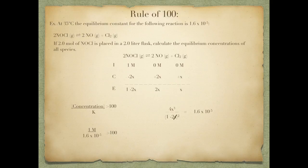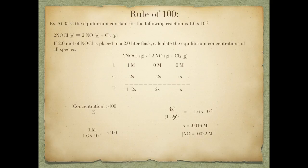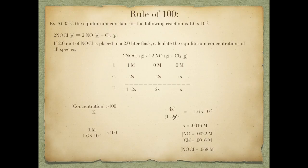Now I just divide both sides by 4 and take the cube root to solve for x, and x equals 0.0016. The concentration of NO is 2x equals 0.0032 molar, chlorine is 0.0016 molar, and NOCL is 1 minus 0.0032 equals 0.968 molar. The Rule of 100 is meant to make your life easier — if K is so small that the concentration divided by K is greater than 100, eliminating that variable will not have a significant impact on your final answer.